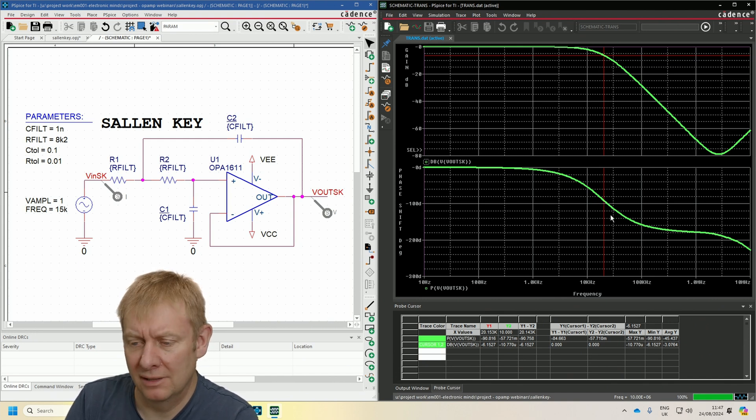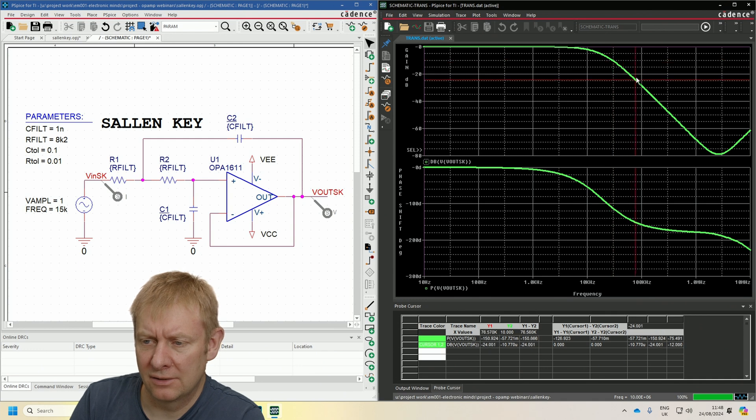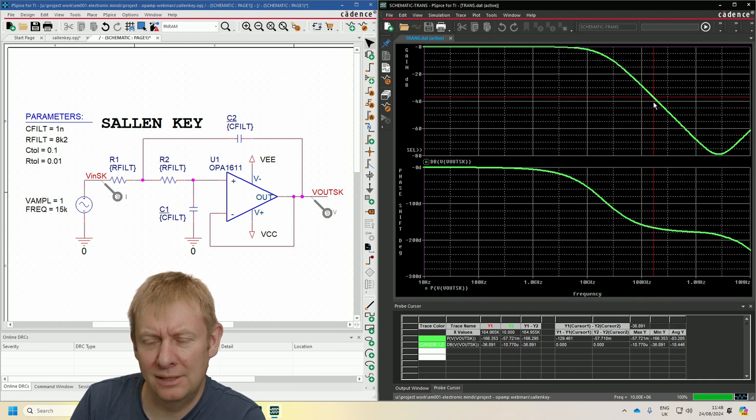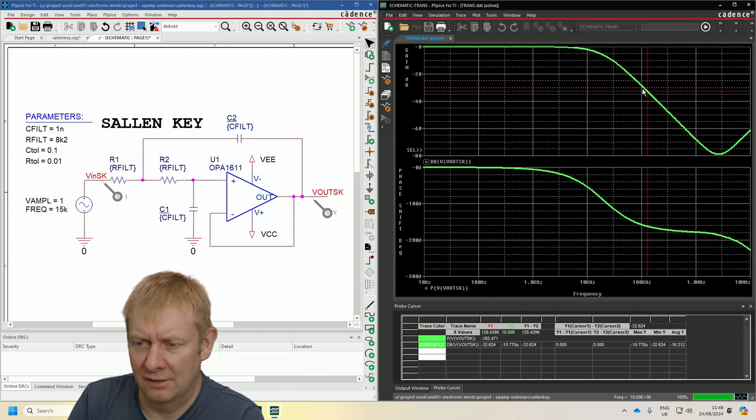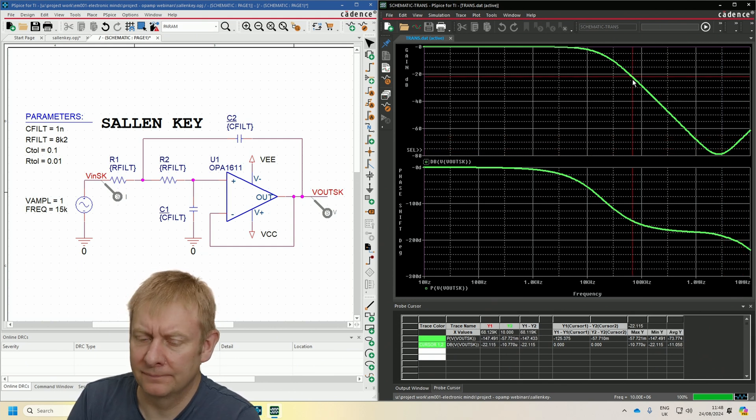What's interesting from this simulation is that because this is a Sallen-Key network, in the stopband we've got the gain diving down at about 40 dBs a decade, but then it starts to pick up again. This is a consequence of how this particular circuit works. This shows us we've got a 20 kilohertz corner frequency. We can vary the filter component capacitor and resistor values, and we've put some tolerances in here to look at tolerance analysis with Monte Carlo simulation.